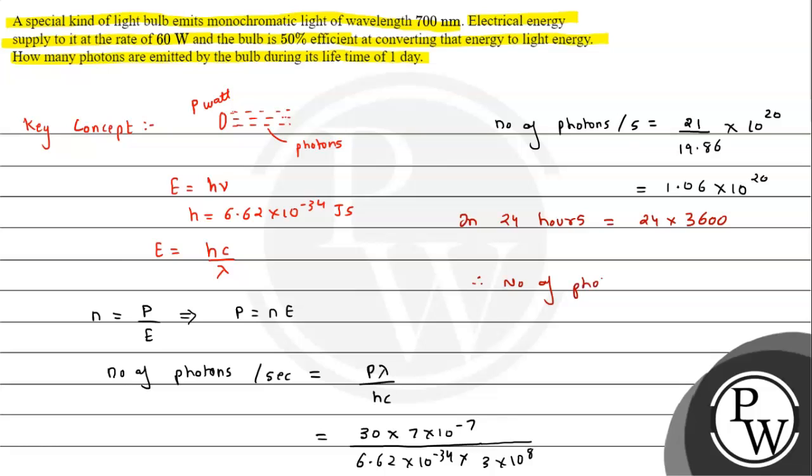Therefore, the number of photons in one day will be equal to 24 × 3600 × 1.06 × 10^20. From this we can say this value comes out to be 9.15 × 10^24 photons.